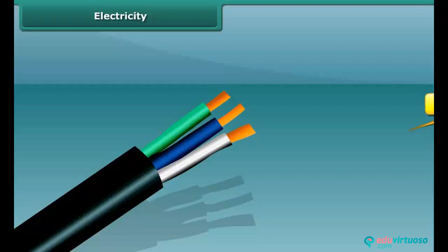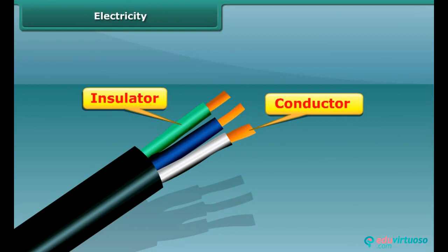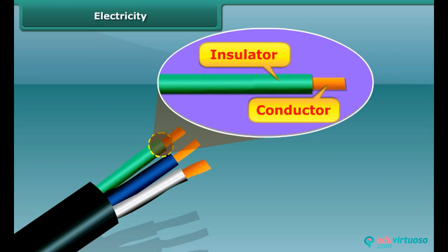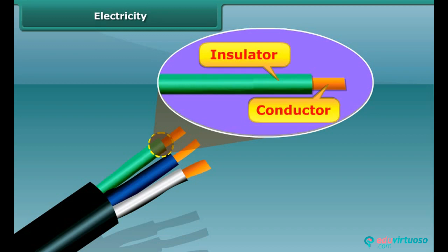Both conductors and insulators are important while using electricity. The conductors like copper or other metallic wires are used for electric supply, but at the same time, these metallic wires are coated by insulating materials like plastic or rubber for safety.